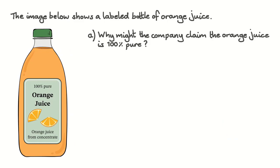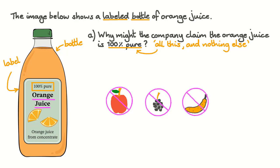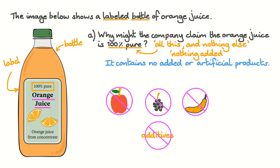The image below shows a labelled bottle of orange juice. Why might the company claim the orange juice is 100% pure? In everyday language, when we see the word pure, it generally means that we're dealing with that thing and nothing else. So this is orange juice and nothing but orange juice — there's no apple juice, no blackberry juice, and no bananas. All the juice in the bottle came from oranges. Something else we might expect when we see the word pure on food or drink is that nothing's been added — no sugars, artificial sweeteners, and so forth. Therefore, a company might claim the orange juice is 100% pure because it contains no added or artificial products.